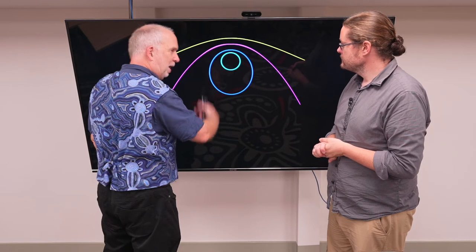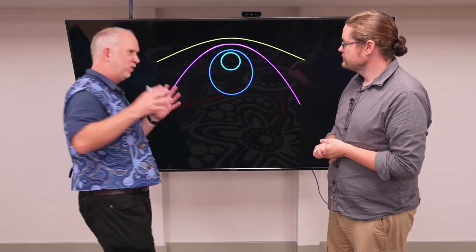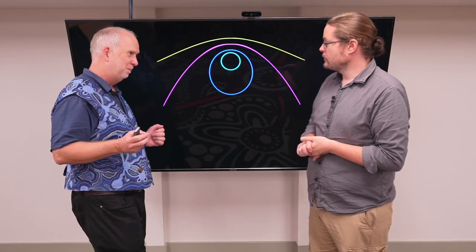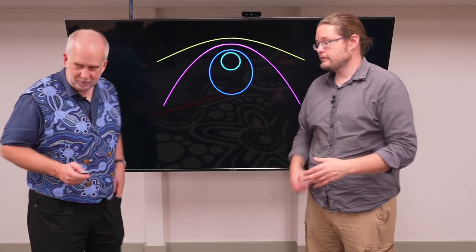So elliptical orbit will come back and depending on how elliptical it might take longer and longer. Parabola is perfectly balanced between coming back and never coming back. And then you get hyperbolic orbits which will just whiz past and disappear off.